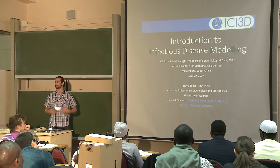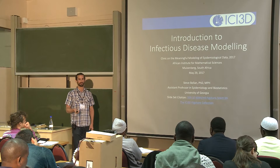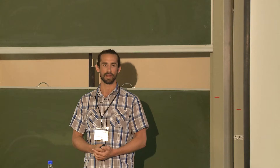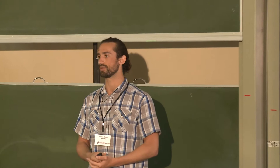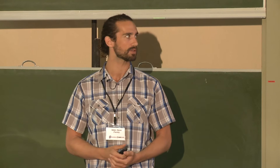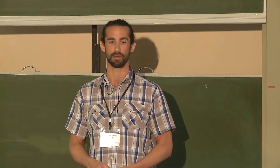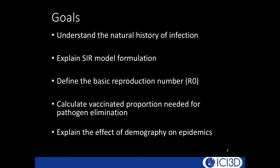This talk is the first technical talk introducing ideas behind mathematical modeling, how this works in practice, and the assumptions involved. The goals are to understand the natural history of infection and its importance for infectious disease dynamics, to understand the basic SIR model, and to introduce the basic reproduction number. We'll also calculate the proportion of a population needed to vaccinate to eliminate disease, and discuss the importance of demography.